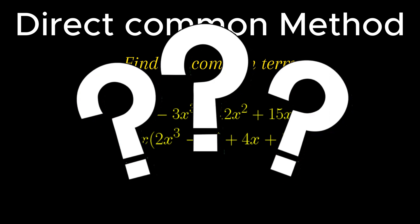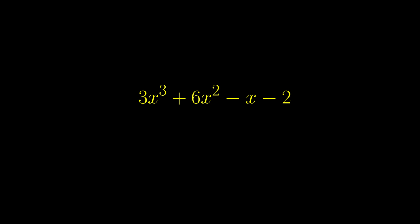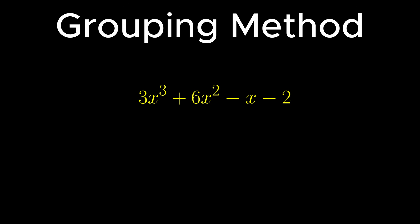What if in an expression there is no common term? Consider an expression 3x cubed plus 6x squared minus x minus 2. It can be observed that neither any constant term nor any variable term is common in the given expression. To factorize such cases, there is another method known as the grouping method. As per the grouping method, groups of 2s are formed, and the direct common method is applied independently to each group. Taking 3x squared as the common factor from the first group, we get 3x squared into x plus 2.